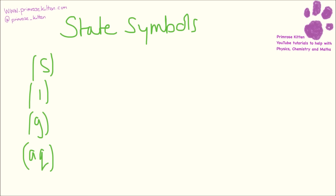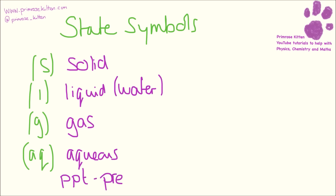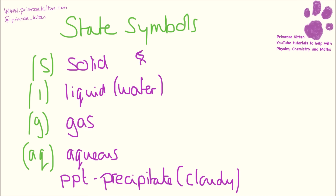If they ask you about state symbols in the exam, it is time to take note because it means they are probably looking for a gas or a solid being produced. If you add two liquids together, look to see whether one of the products is a solid or a gas, because that's the sort of thing they're looking for in the answer. Liquid generally is just going to be water. Aq is aqueous, which means something dissolved in water. And there is another one — PPT — which is precipitate, which means it goes cloudy. A solid produced means it goes cloudy; gas means you are going to get bubbles.